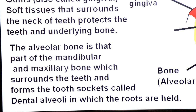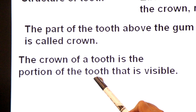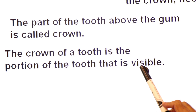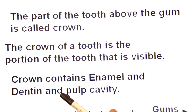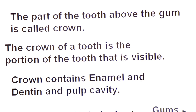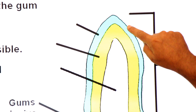In these sockets the roots are held. Now we come to the crown part. The crown of the tooth is the portion of the teeth that is visible, while the root part is invisible. The crown contains three parts: enamel, dentin, and pulp cavity.